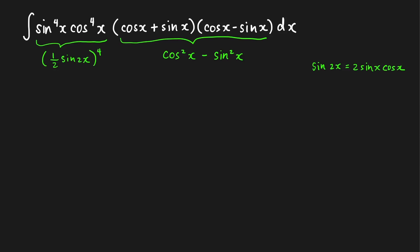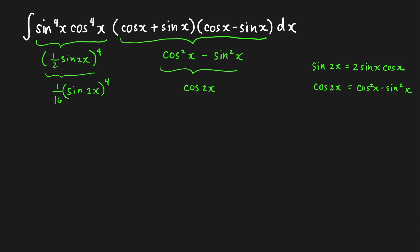Factoring out the power of 4, we can also write the cosine squared x minus sine squared x part using the double angle identity for cosine: cosine 2x equals cosine squared x minus sine squared x. So that simplifies to cosine of 2x, and our expression becomes one over 16 times sine of 2x raised to the fourth, times cosine of 2x. Therefore, our integral becomes the integral of one over 16 times sine 2x raised to the fourth times cosine 2x dx.